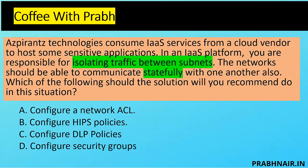Aspirants Technology consumes IaaS services — like EC2 instances in Amazon or instances in Google — from a cloud vendor to host some sensitive applications. Sensitive applications are more concerned about data disclosure. You are responsible for isolating traffic between subnets, because machines may be sharing hardware with other company tenants. Another keyword is subnet. The network should also be able to communicate statefully, maintaining state tables between systems. Which solution would you recommend?